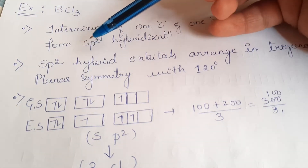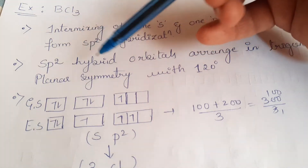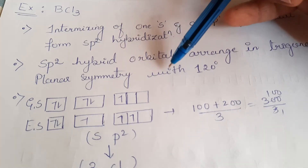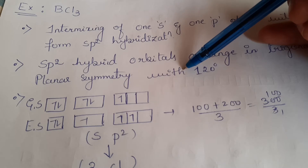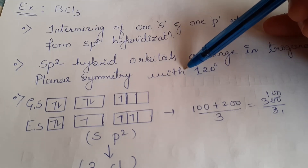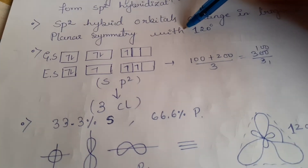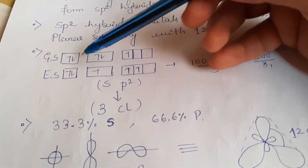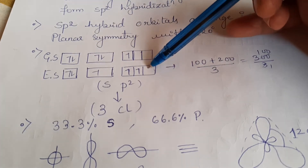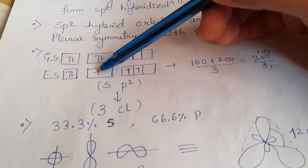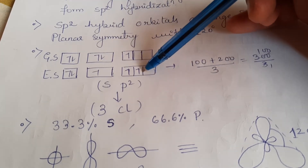The SP² hybrid orbitals arrange in trigonal planar symmetry. The bond angle is different from what we saw in ethane and beryllium chloride, where it was 180 degrees. In boron, we have five electrons arranged as 1s2 2s2 2p1. One of the 2S electrons shifts to the 2P orbital. So 1S orbital and 2P orbitals are involved — that is, 3 orbitals in total participate.